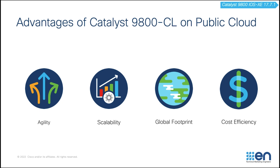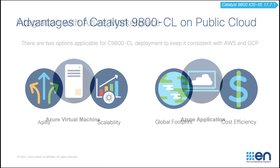Last but not least, cost efficiency. First of all, it takes zero dollars to launch a Catalyst 1900 CL on Microsoft Azure. It reduces data center footprint and infrastructure costs, shifting from a capex model to an opex model where you will get billed as you utilize the resources.